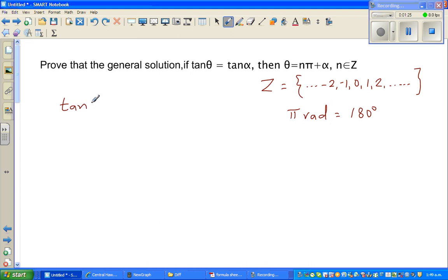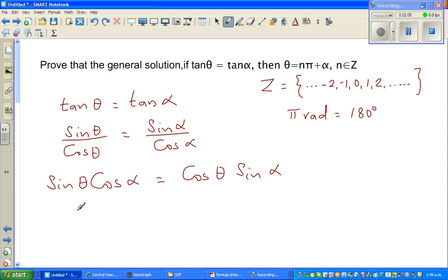So we know that if we can express tan θ as tan α, we want to prove this. So I'm going to write this as sin θ over cos θ is equal to—oops, this should be α—this should be α. So this is equal to sin α over cos α. So I'm going to cross multiply. So this is sin θ times cos α is equal to cos θ times sin α. So bringing this to this side, this becomes sin θ times cos α minus cos θ times sin α is equal to 0.